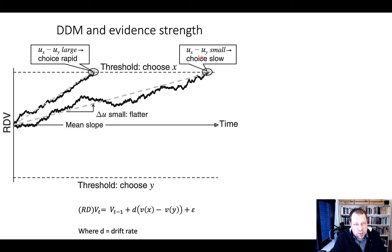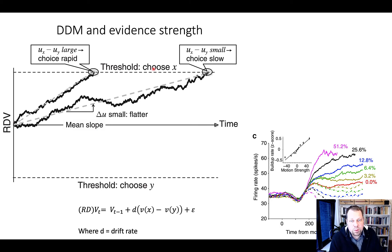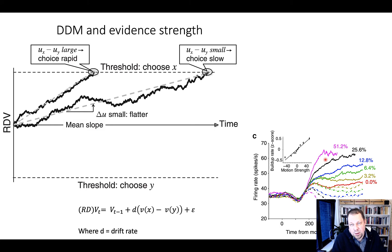This is something the model represents well because it takes into account reaction times, which can predict the slope of the decision or evidence accumulation process. And this looks very much like what neurons in LIP do when voting for a certain direction, which then leads to a reward — so it's reward-based.